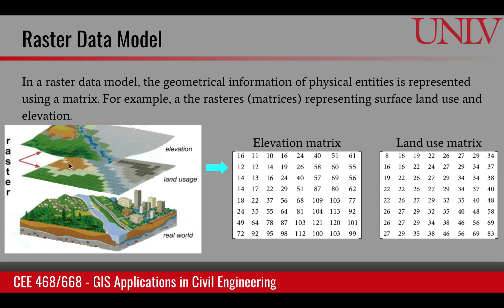Both of these layers correspond to two matrices in the computer. A cell might have an elevation value of 16 and a land use value of 8. That land use value of 8 could represent, for example, vegetation. So a matrix is what represents the raster data model in a computer.